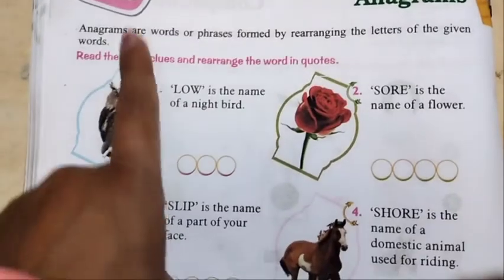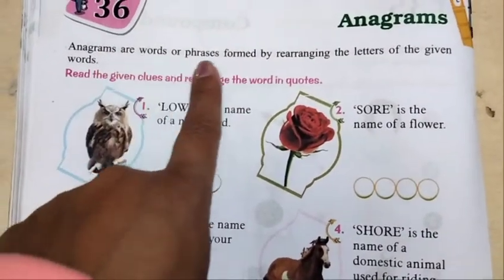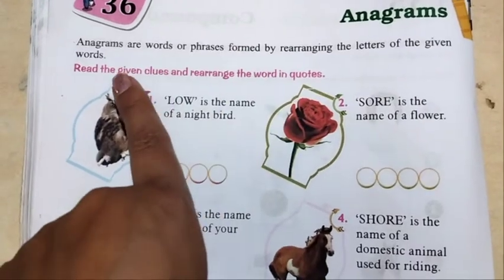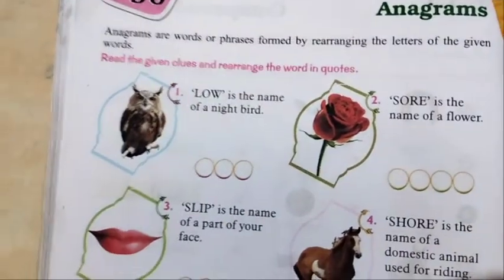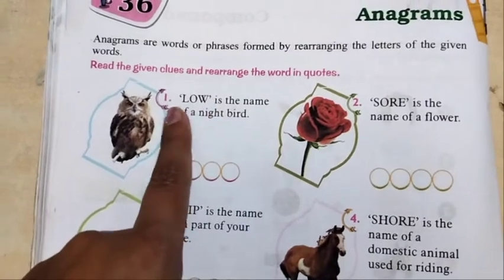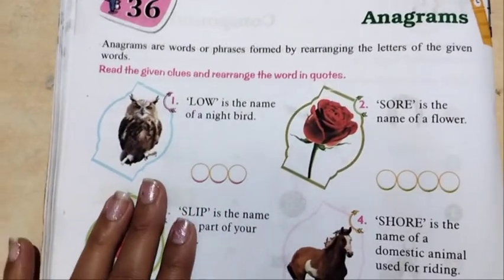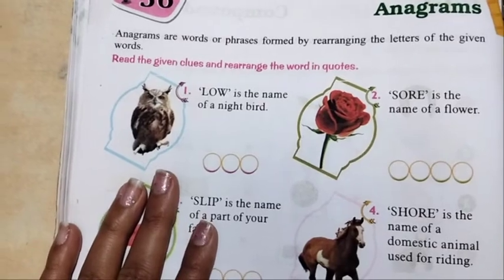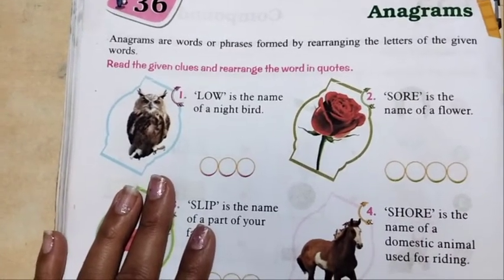What are anagrams? Anagrams are words or phrases formed by rearranging the letters of a given word. When we are given some words in a rearranged form and we arrange them correctly to form the right spelling, those words are called anagrams.